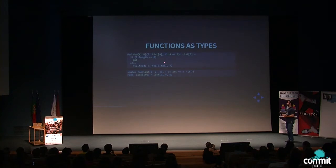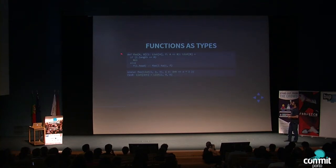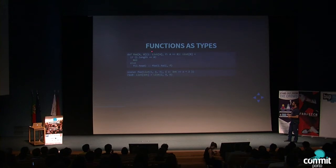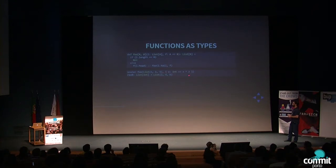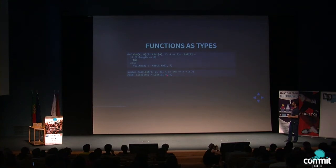Scala also has the notion of functions as types, and functions are first-class citizens. Here I have a function `foo` with two type parameters that accepts a list and a function from A to B. What this function does is apply F to all elements of the list. When I call this function, I declare an anonymous function that accepts an Int and multiplies it by two. So if I have a list of three elements and multiply each by two, I get 2, 4, 6.